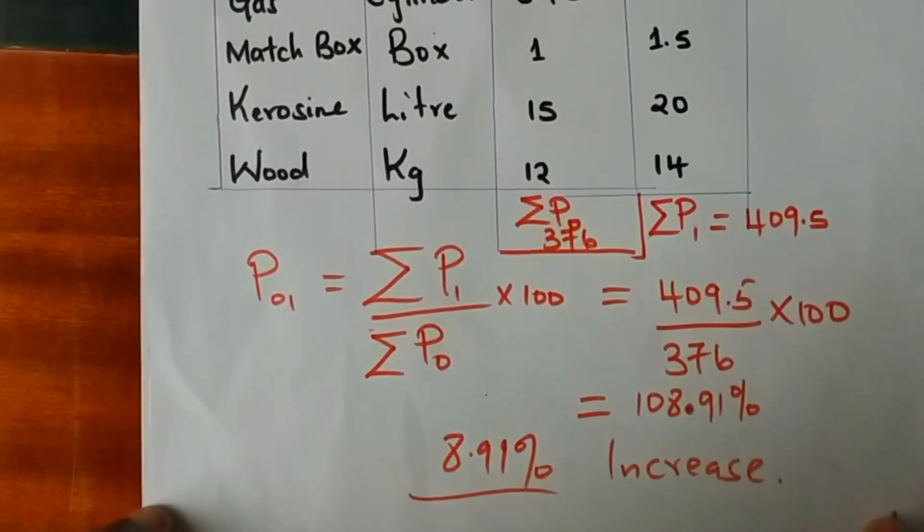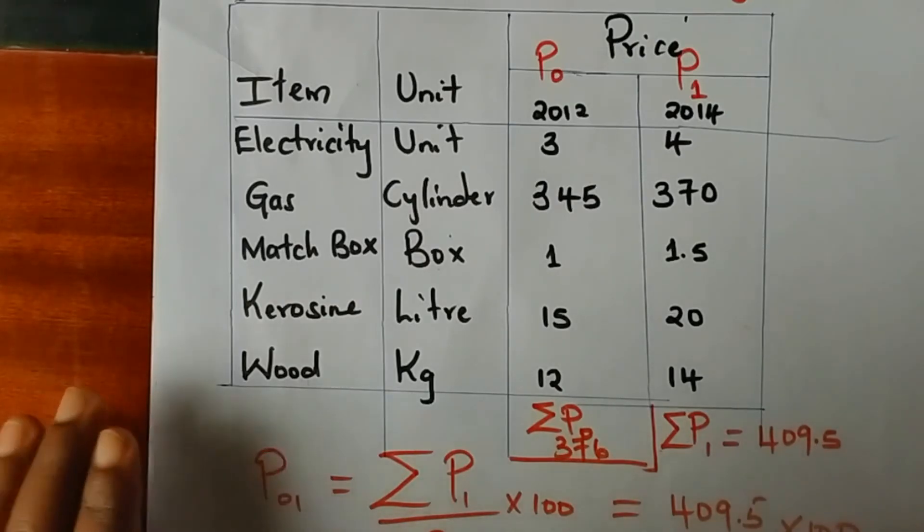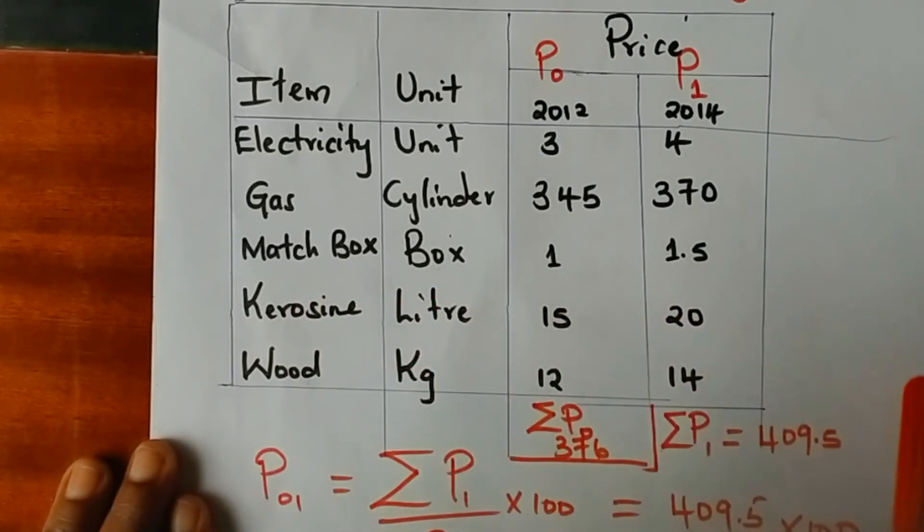While this method is very simple, very simplistic, it has some limitations. One of them is that it is highly influenced by extreme observations.